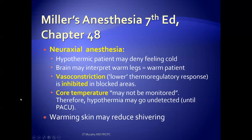Now let's talk about neuraxial anesthesia — spinal anesthesia. A patient under spinal anesthesia has no sensation of their limbs. Likewise, they may deny feeling cold when, in fact, they are hypothermic. The brain may interpret warm legs to mean a warm patient. Vasoconstriction, the lower thermoregulatory response, is inhibited in blocked areas. Likewise, the awake patient may not undergo core temperature monitoring.